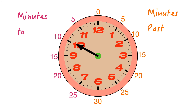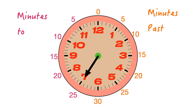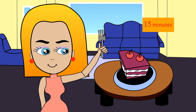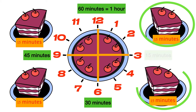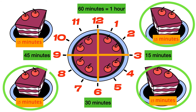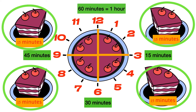Pointing to the large 10, we have 10 minutes to go. 15 minutes to go, 20 minutes, or 25. A quarter in time is 15 minutes. 15 minutes plus 15 minutes equals 30 minutes. 30 minutes plus 15 minutes equals 45 minutes. 45 plus 15 minutes equals 60 minutes. 60 minutes equals one hour.